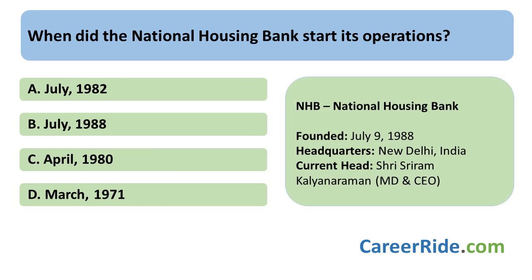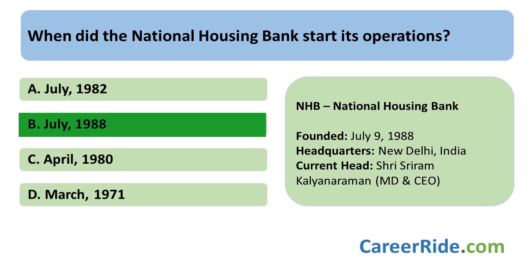When did the National Housing Bank start its operation? The National Housing Bank is the apex institution of housing finance in India. It is a wholly owned subsidiary of RBI. It was founded on July 9, 1988, and was set up under the National Housing Bank Act of 1987. At present, the headquarters of National Housing Bank are in New Delhi, and the current head is Mr. Sriram Kalyaraman.